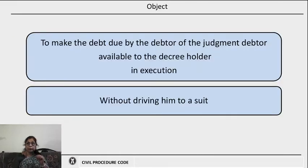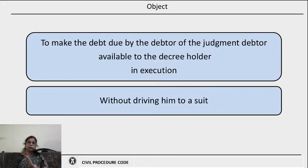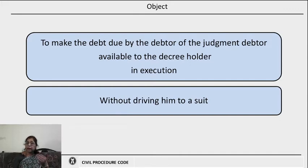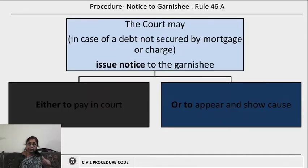The object of this particular order is to make the debt which is due by the debtor of the judgment debtor available to the decree holder in execution. The decree holder need not be driven to a separate suit for the purpose of accessing that amount or property in the hands of a third person who is a debtor of the judgment debtor.